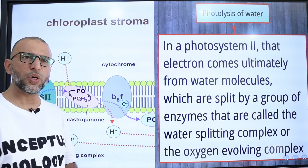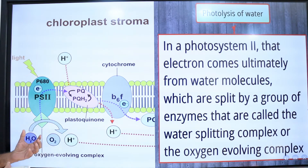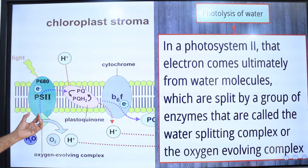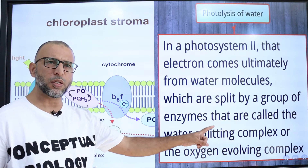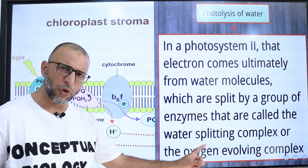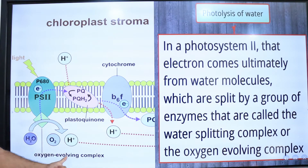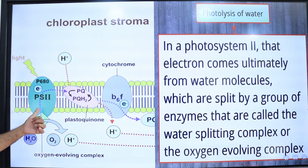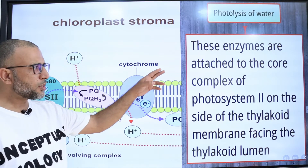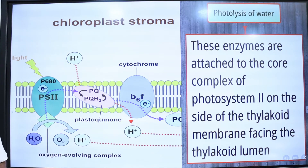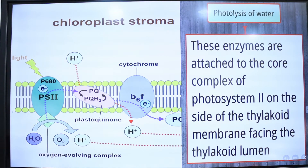In photosystem II, the electrons come ultimately from water molecules, which are split by a group of enzymes called the water splitting complex. It is also known as the oxygen evolving complex, and it is bonded or attached to photosystem II towards the side of the thylakoid lumen, meaning towards the thylakoid interior space. The enzymes are attached to the core complex of photosystem II on the side of the thylakoid membrane facing the thylakoid lumen.